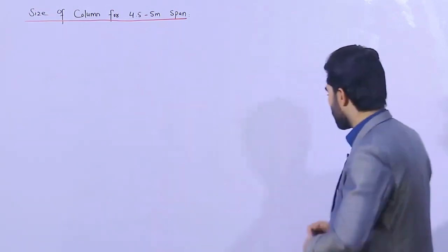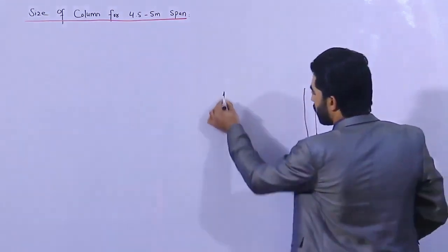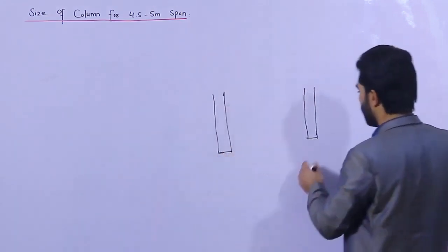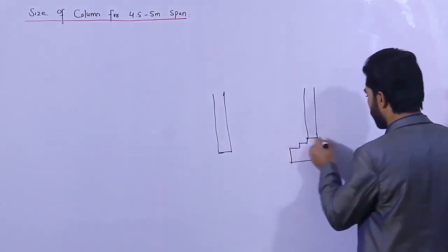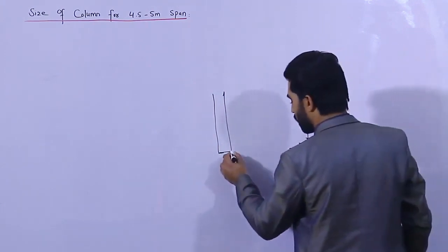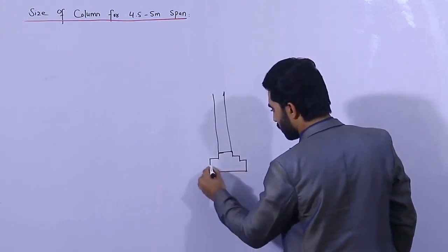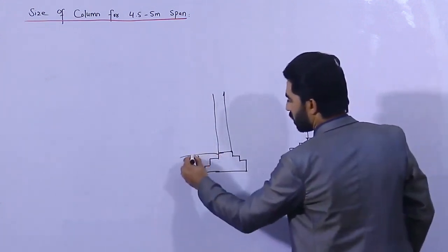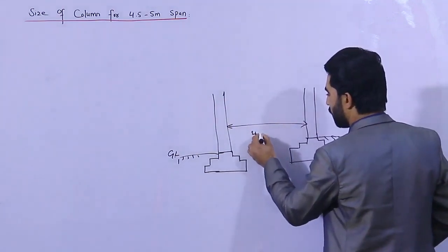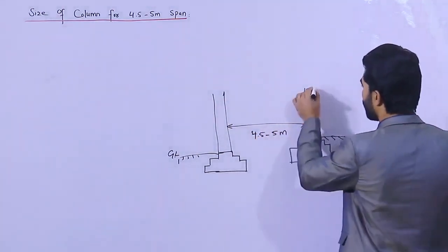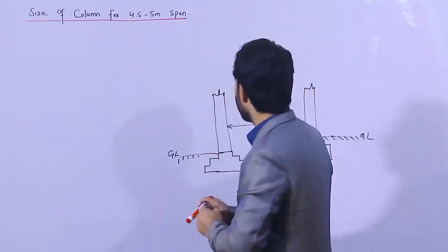Let's get started. Suppose this is one column and this is the other column, and this is its footing at ground level — same here. So the span is from 4.5 to 5 meters. What should be the size of column?